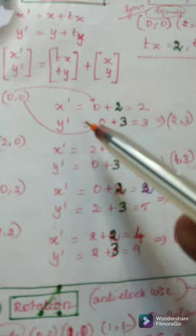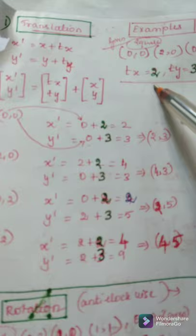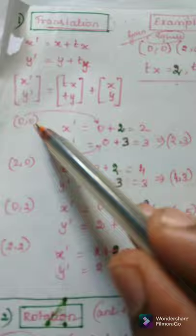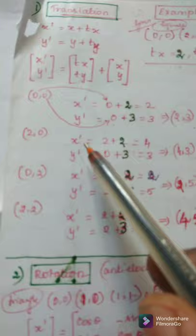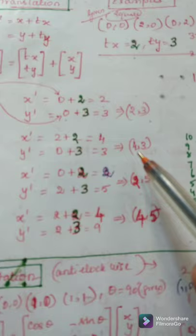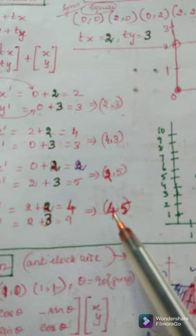If we substitute these values in the formula for all the coordinates, for 0, 0, X dash equal to 0 plus 2. 0 is X value plus 2 TX value. So, 0 plus 2 equal to 2. Similarly, Y dash equal to Y coordinate 0 plus translation vector 3. By applying this formula, we will be getting the new coordinates as 2, 3 for 0, 0. Similarly, for 2, 0, we get 4, 3. And for 0, 2, 2, 5 and 2, 2, 4, 5.